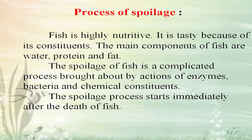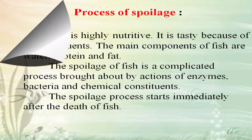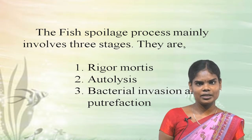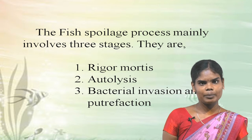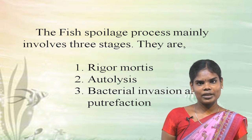Next is the process of fish spoilage. Fish is highly nutritive and tasty because of its constituents. The major components of fish are protein, fat and water. Fish spoilage is a complicated process brought about by the action of insects, bacteria and chemicals present in the fish. Fish spoilage mainly occurs through three processes: rigor mortis, autolysis, and bacterial invasion or putrefaction.